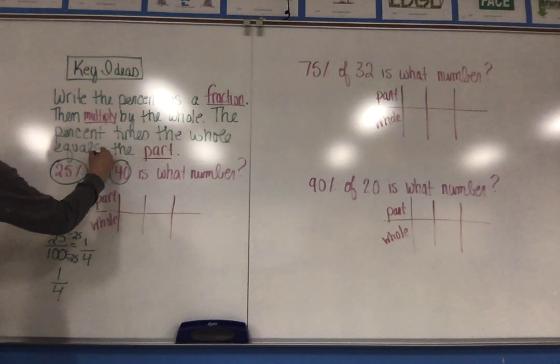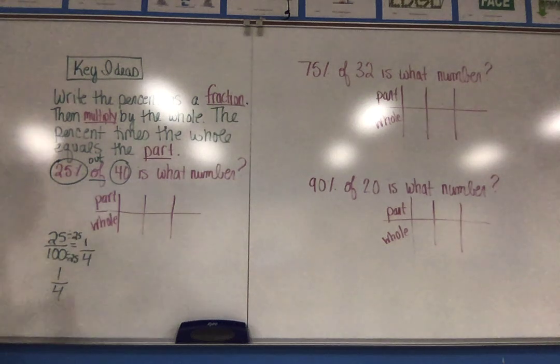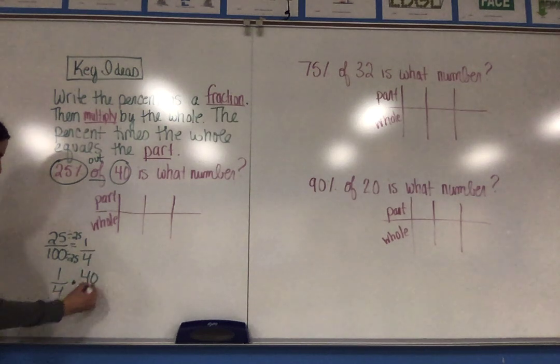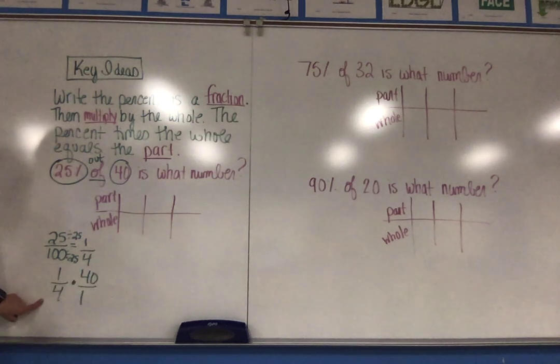Think of this as like being out of 40, which helps you find the whole. Then I'm going to multiply. I can put 40 over 1. You still want to follow your rules of multiplication and cross-reduce by dividing by the greatest common factor.